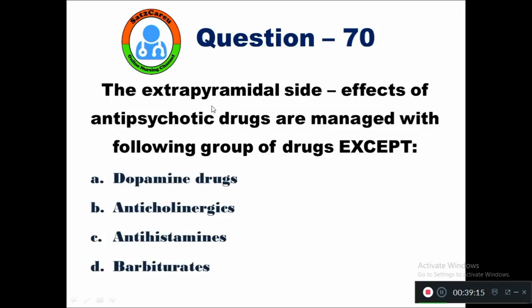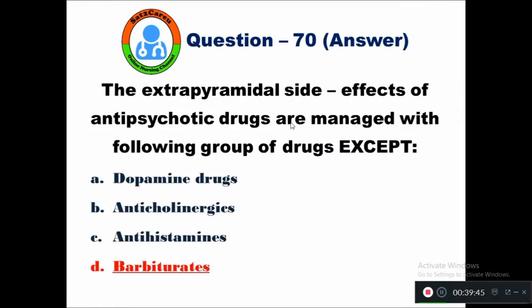Question 70: The extrapyramidal side effects of antipsychotic drugs are managed with the following group of drugs except — option A dopamine drugs, B anticholinergic, C antihistamine, D barbiturates. The right answer is barbiturates — barbiturates are not used for the treatment of extrapyramidal side effects.